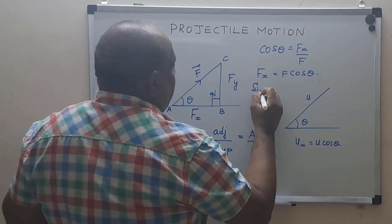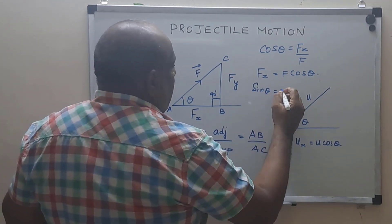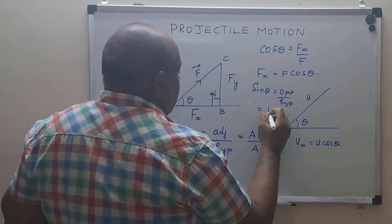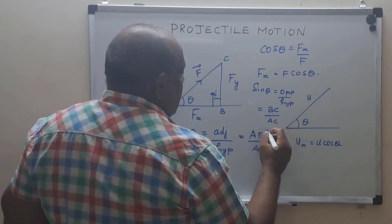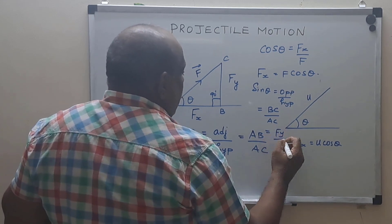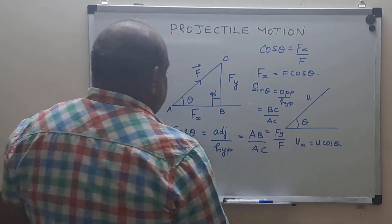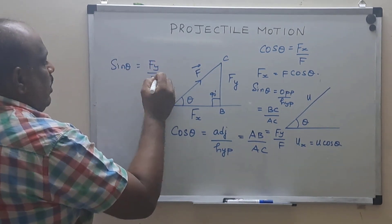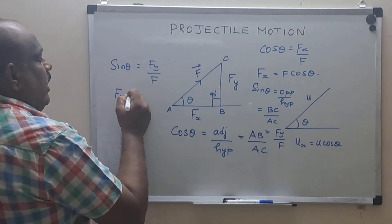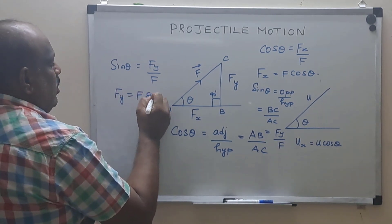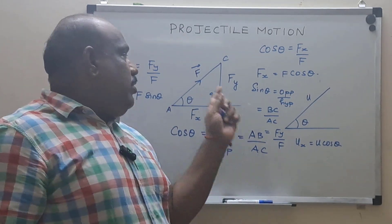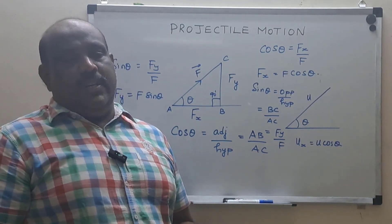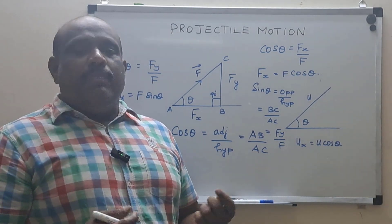Now for sin theta: sin theta equals opposite over hypotenuse. The opposite side is BC which is Fy, and the hypotenuse is AC which is F. So sin theta = Fy / F, giving Fy = F sin theta. If you know angle theta and the resultant force, you can resolve it into horizontal component F cos theta and vertical component F sin theta.